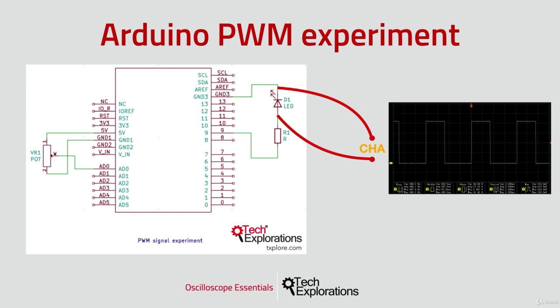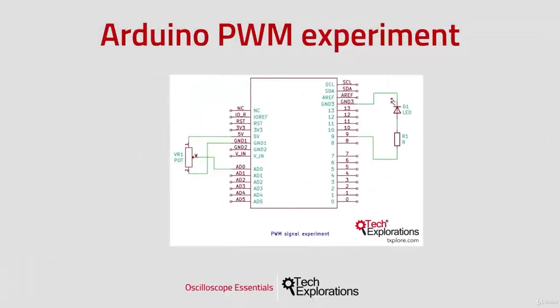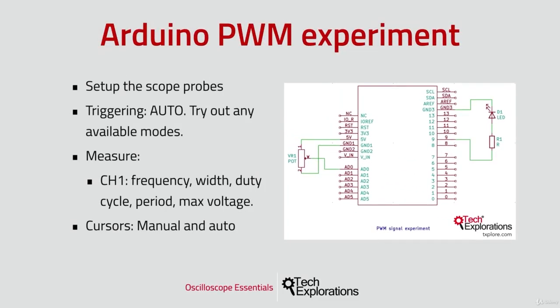When the signal is repetitive and regular, automatic trigger will usually work out of the box. In this experiment, setting up the oscilloscope's trigger is very easy — just press the auto button.